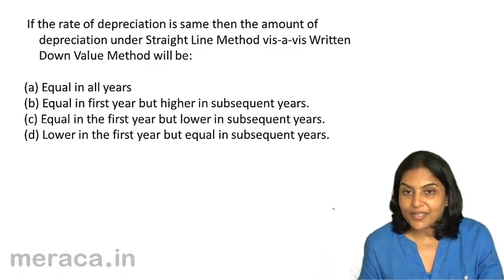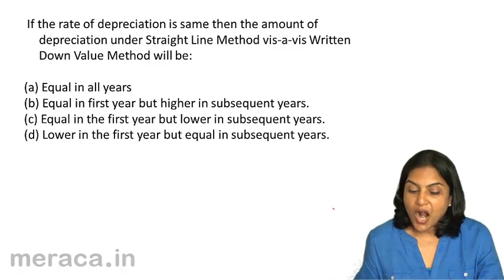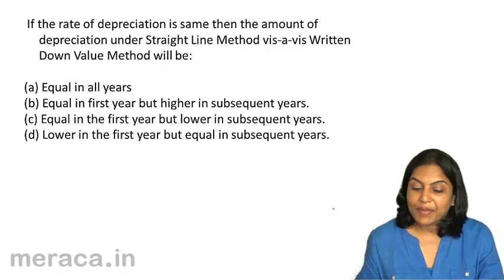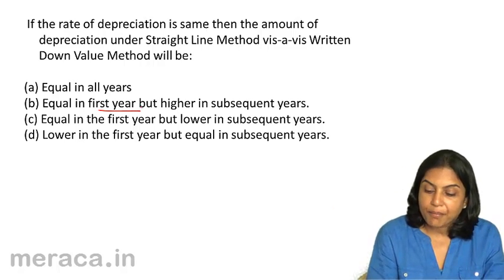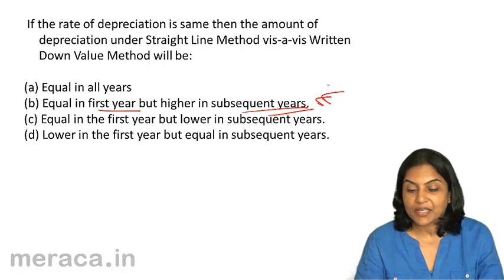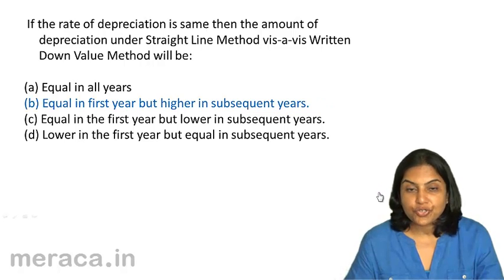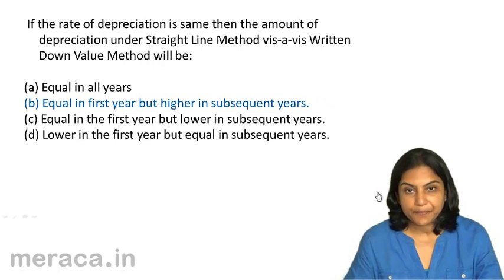Therefore, under written down value the depreciation will be less. The amount of depreciation under straight line method will be equal in the first year but higher in subsequent years — higher under straight line method and lower under written down value method. The correct answer is B.